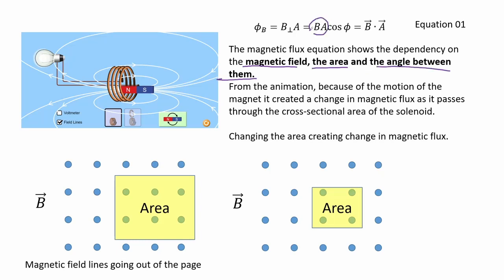Because of the motion of the magnet it created a change in magnetic flux as it passes through the cross-sectional area of the solenoid. We can also include the speed of the magnet as a factor in changing the magnetic flux. But essentially it is the changes in flux which produces current flow. Here we have a magnetic field pointing outwards, and by taking an area of different sizes we see how much field is contained, and this causes changes in magnetic flux.